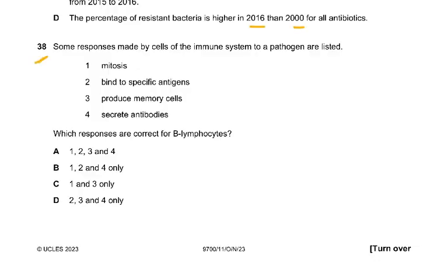Then coming to question number 38. Some responses made by cells of the immune system to a pathogen are listed. Which responses are correct for B lymphocytes? Mitosis, bind to specific antigens, produce memory cells, secrete antibodies — all are correct: 1, 2, 3, and 4. Because B lymphocytes bind to antigen, then they divide by mitosis, produce memory cells, and the plasma cells produce antibodies. The memory cells remain in the system.